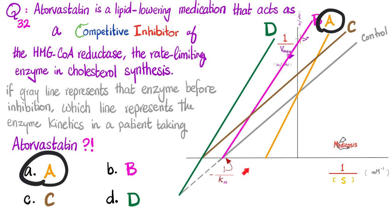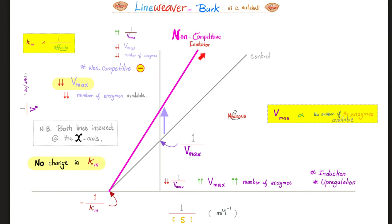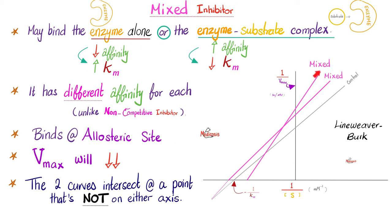By taking atorvastatin, the Vmax of the enzyme does not change but Km increases — affinity decreases. For a non-competitive inhibitor: the y-axis intersection shifts up (Vmax decreases), but the x-axis intersection does not change (Km unchanged, affinity unchanged).